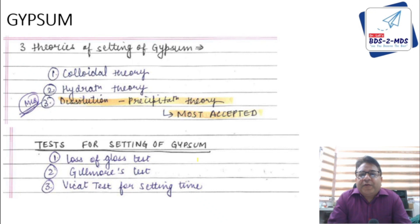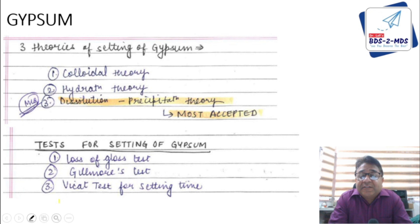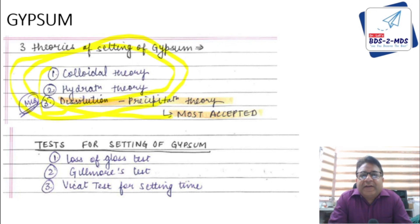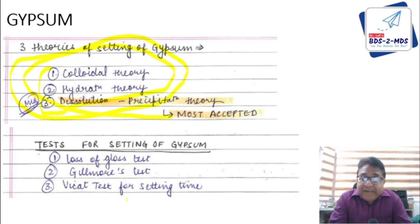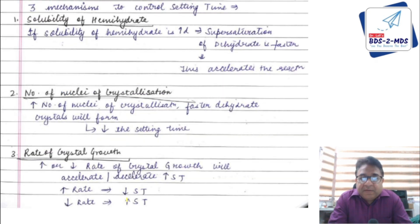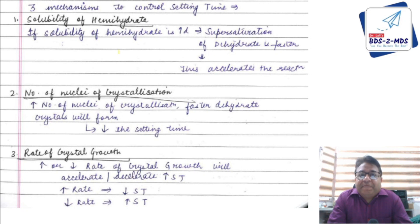Chapter three on gypsum: you will definitely get one question on the three theories of setting of gypsum. The most accepted theory is the dissolution-precipitation theory. Tests for setting of gypsum include the loss of gloss test, Gilmore test, and Vicat test. Three mechanisms control setting time — know all three as questions ask which is or is not a mechanism.